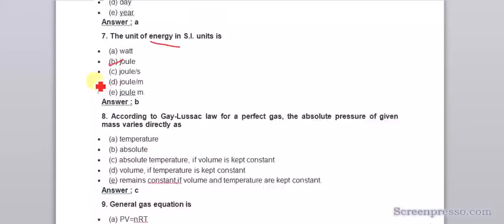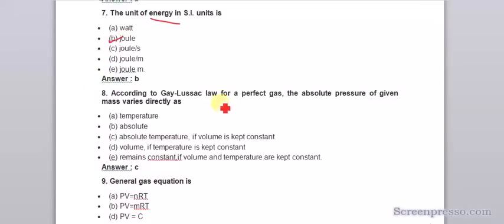According to Gay-Lussac's law for a perfect gas, the absolute pressure of a given mass varies directly as volume if temperature is kept constant. At constant temperature, the absolute pressure is directly proportional to volume.